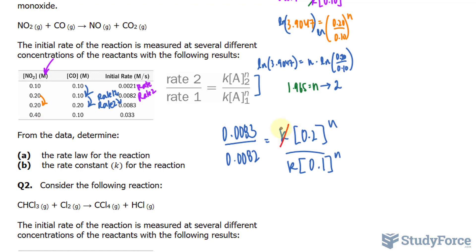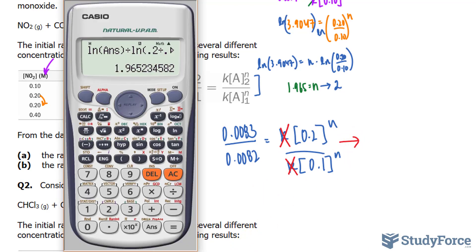We'll cancel this out, just as before. And just as before, we'll solve for n. So I'm going to do this quickly now that you know what to do: 0.083 divided by 0.0082.